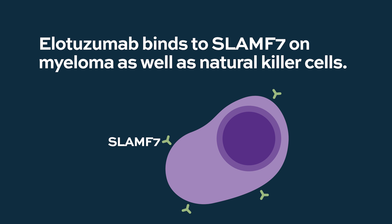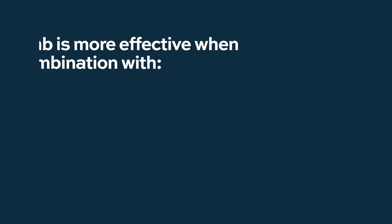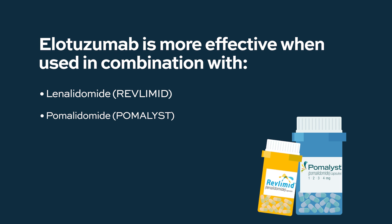Elotuzumab binds the target SLAMF7, a protein expressed on myeloma cells and also on natural killer cells. Elotuzumab can activate natural killer cells, which are important in myeloma control. By itself, elotuzumab doesn't have clinical efficacy, but when combined with immune-modulating drugs like lenalidomide or pomalidomide, it adds significant benefit. Combinations of elotuzumab with revlimid or pomalidomide-dexamethasone are now approved, as is daratumumab with revlimid and pomalidomide.